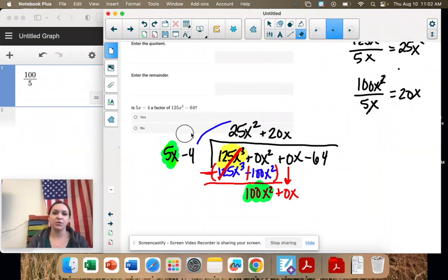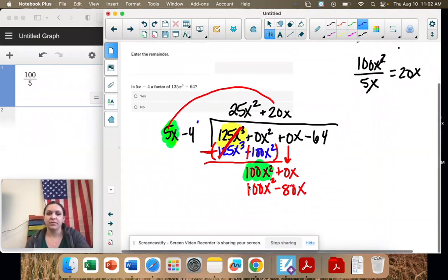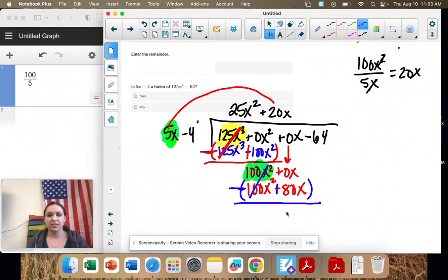So same thing, we got to multiply both of these. 20 times 5 is 100. x times x is x². 20 times negative 4 is negative 80x. Okay, I'm going to subtract both of these. So the signs change to negative and negative negative positive. Those cancel out. 0 plus 80 is 80x. I'm going to bring down negative 64.